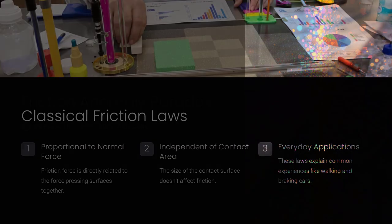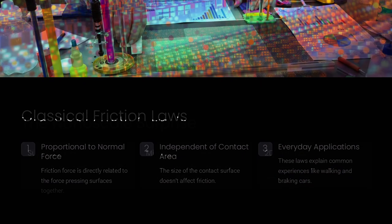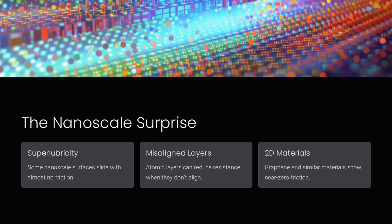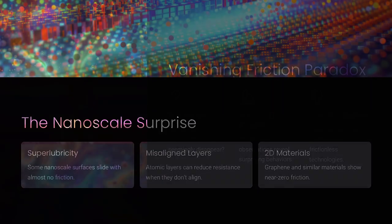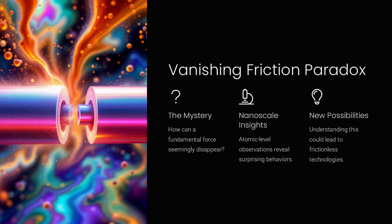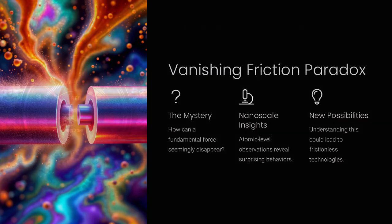Friction is something we experience every day, from walking on the ground to stopping a moving car. Classical physics describes friction using simple laws. The force of friction is proportional to the normal force and independent of contact area.